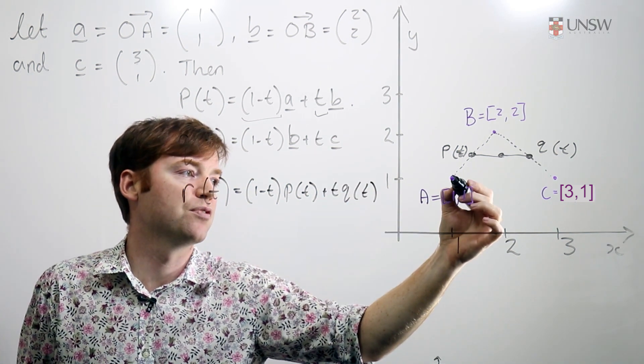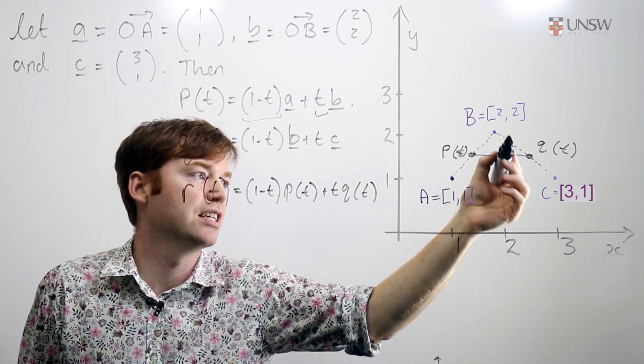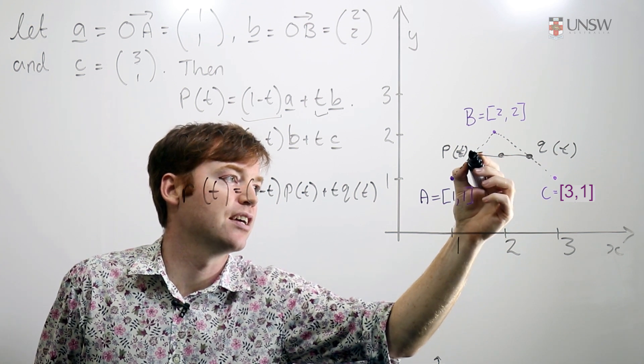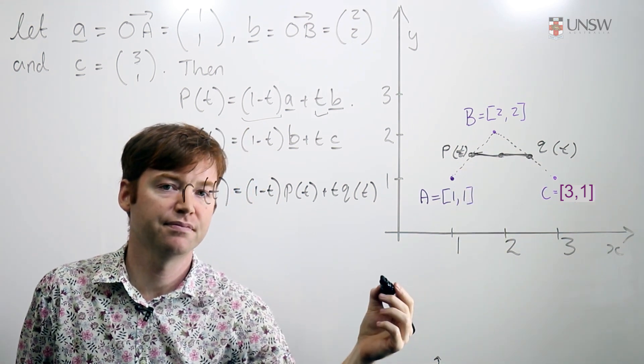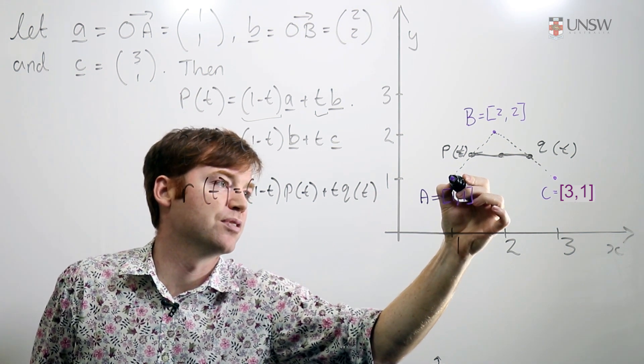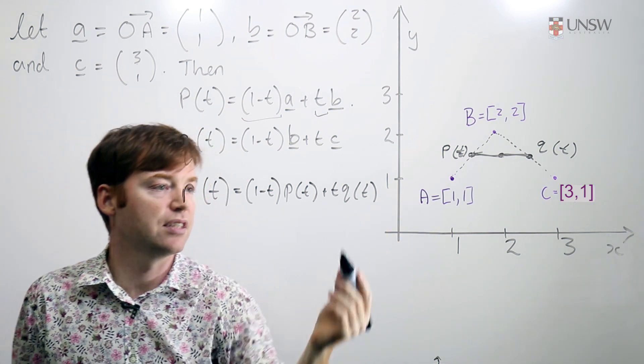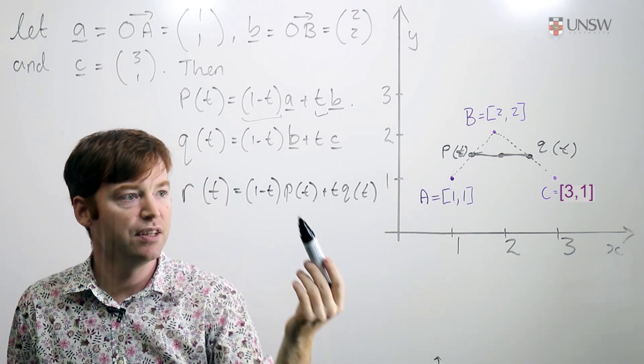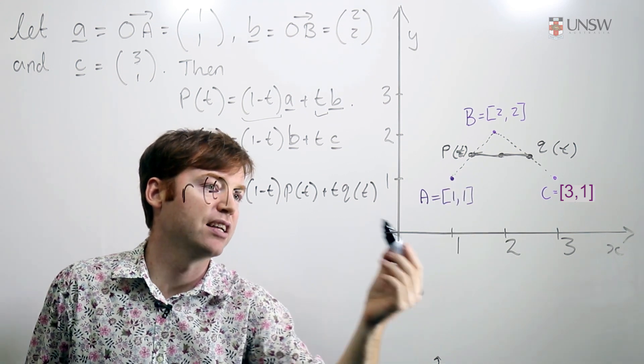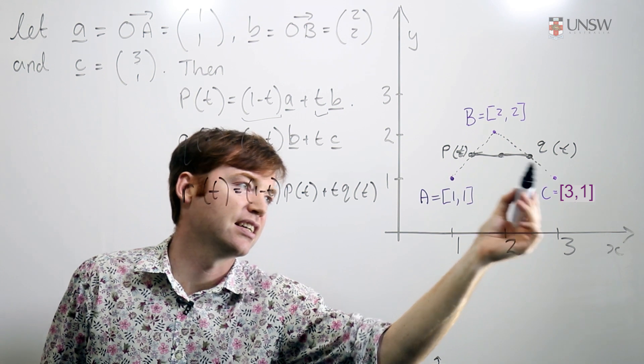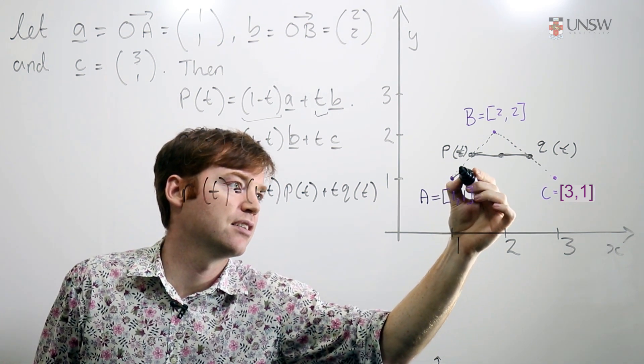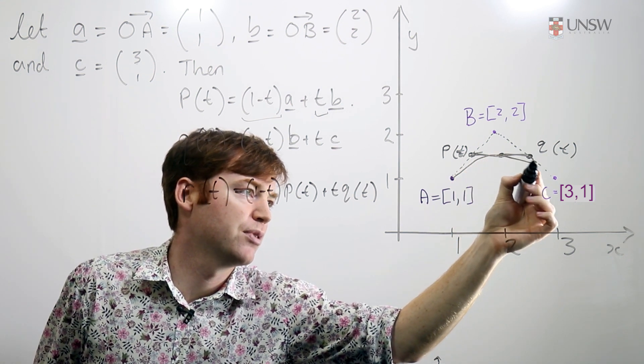As time goes from 0 to 1, my point p of t is moving along here, my point q of t is moving along here, and my point r of t is moving along this line from p of t to q of t. When time is 0 then all my weight is at p of t and p of t is down here. When t is 1, all my weight is at q of t and q of t is here. And as t goes from 0 to 1, we get this lovely kind of parabolic curve.